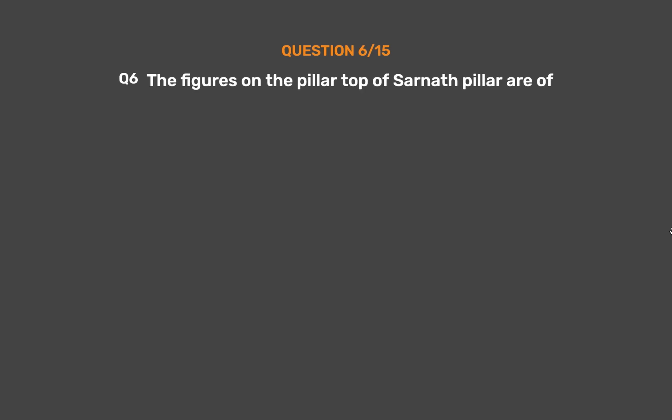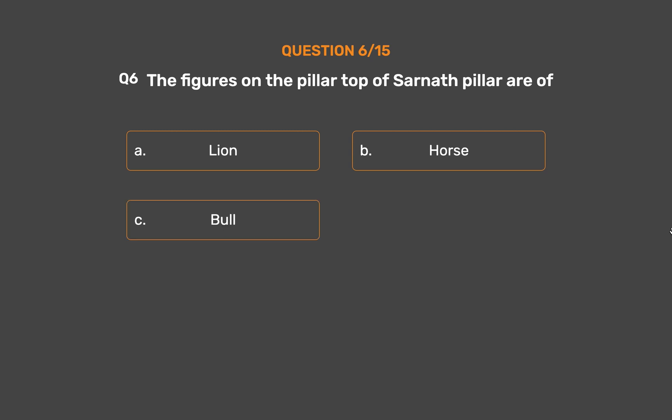Question No. 6. The figures on the pillar top of the Sarnath pillar are of: Option A: Lion. Option B: Horse. Option C: Bull. Option D: Elephant.